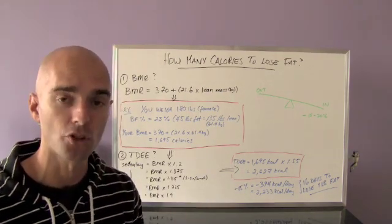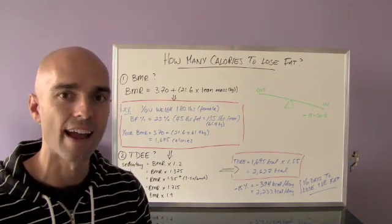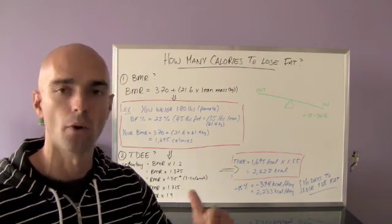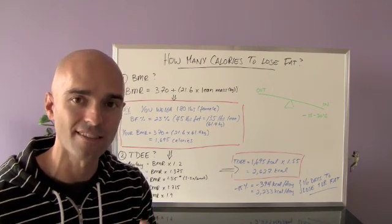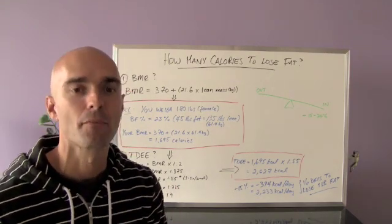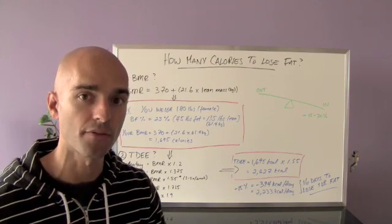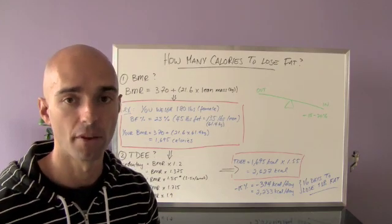Now, we're going to go through an example to show you how this works. Now, the reason this equation is nice is because metabolic rate is heavily dependent on how much muscle mass you have on your body. So other equations that are out there that don't take into consideration your lean body mass are very, very inaccurate. Because if you have 20% body fat versus 25% body fat, that's going to make a huge difference on your basal metabolic rate.